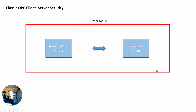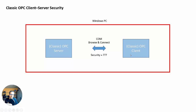With classic OPC, the security is basically questionable — almost no security in it. As I told you in the previous video, in order for an OPC client to connect to a server, it's just browse and connect. There's no username and password, there's no encryption, there's nothing. That was okay because classic OPC was usually running on the same Windows PC on the plant network, there was an air gap — no physical connection between the plant network and the IT network — and only certain people could get in front of the PC running this stuff. So it was secure in that way.